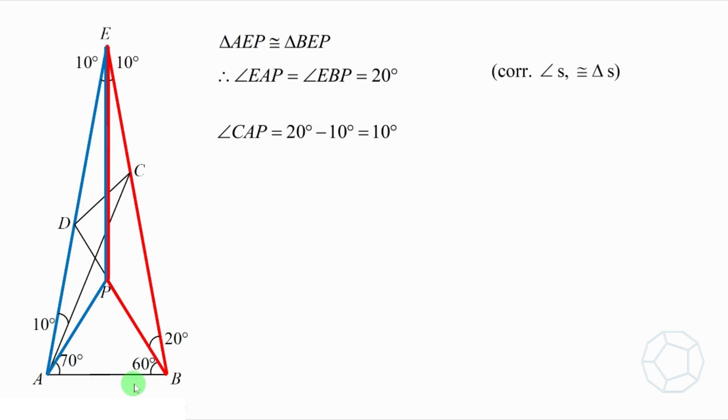Also, it's given that angle CAB is 70 degrees. Therefore, angle PAB is equal to 70 degrees minus 10 degrees, which is 60 degrees. So we'll have two 60 degree angles in this smaller triangle.